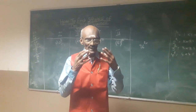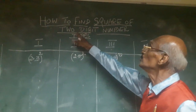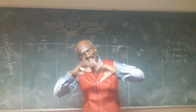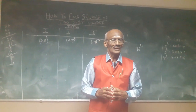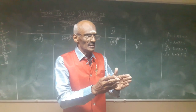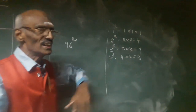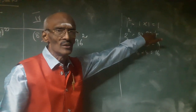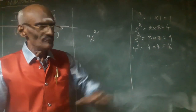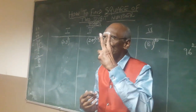Today I am going to explain an interesting topic — namely, how to find the square of a two-digit number. This is an interesting topic; you can find the square of any two-digit number. But before you understand the actual implication, one must have a basic knowledge of how to find the square of a single-digit number. One squared is one, two squared is four, three squared is nine, and so on.